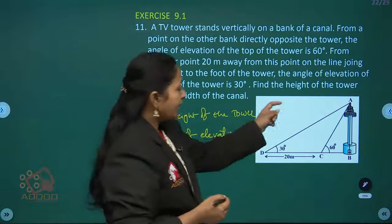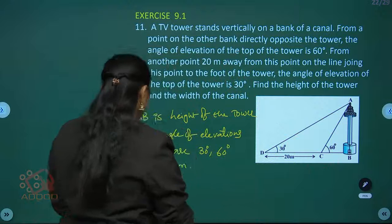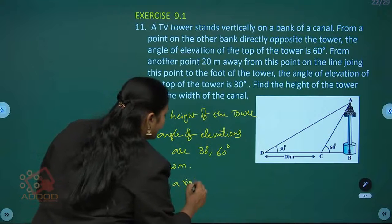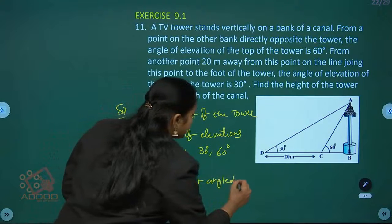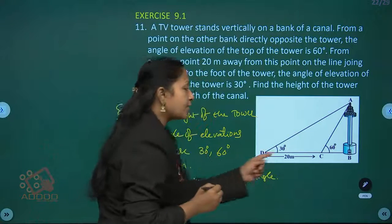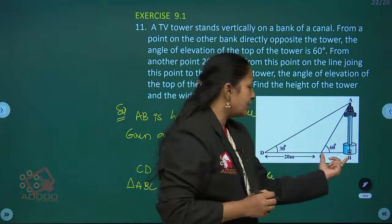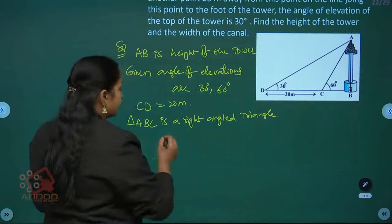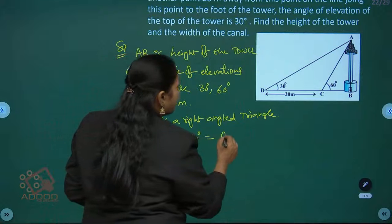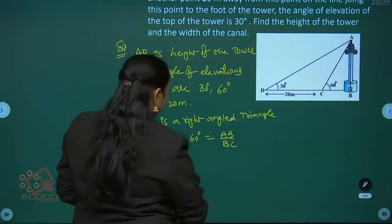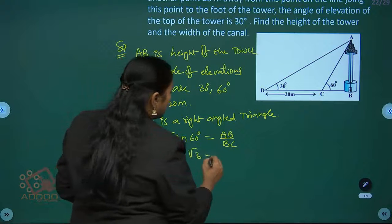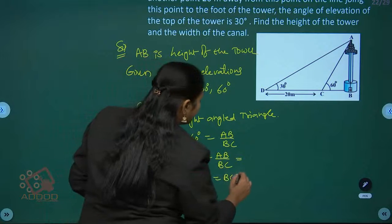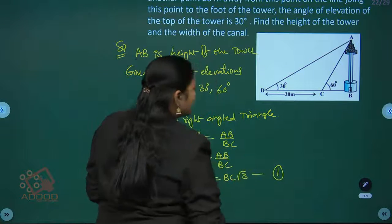From the figure, triangle ABC is a right-angled triangle. With respect to 60 degrees, the opposite side is AB and the adjacent side is BC. Let's take tan 60 degrees: tan 60 degrees equals AB by BC. Tan 60 is root 3, so root 3 equals AB by BC. Therefore AB equals BC into root 3. Let this be equation 1.